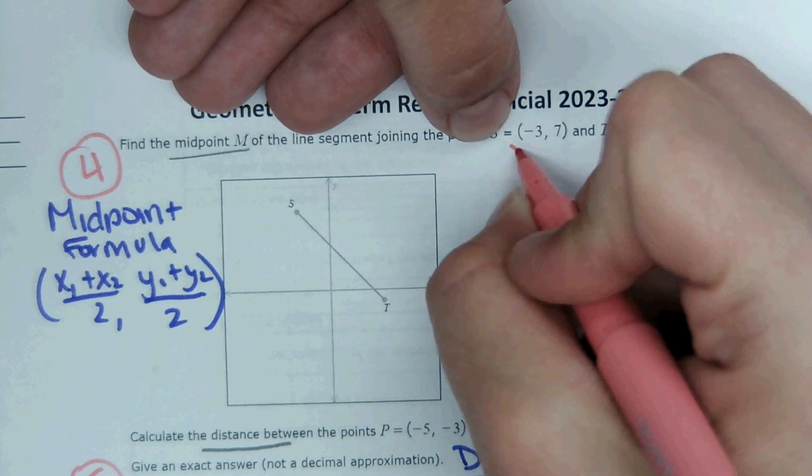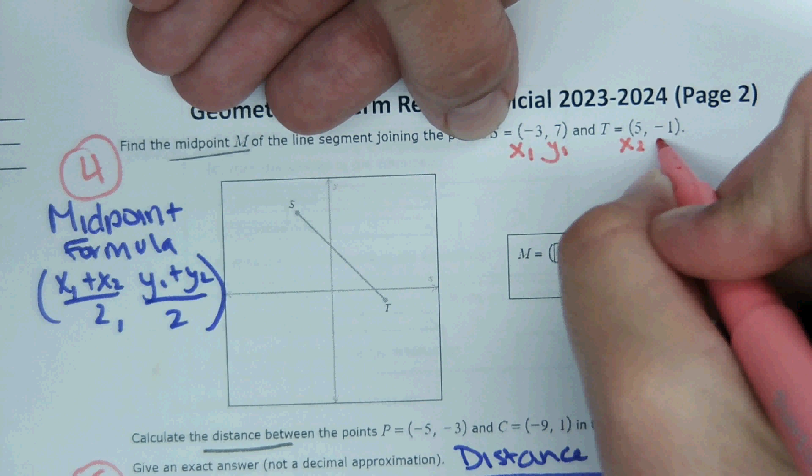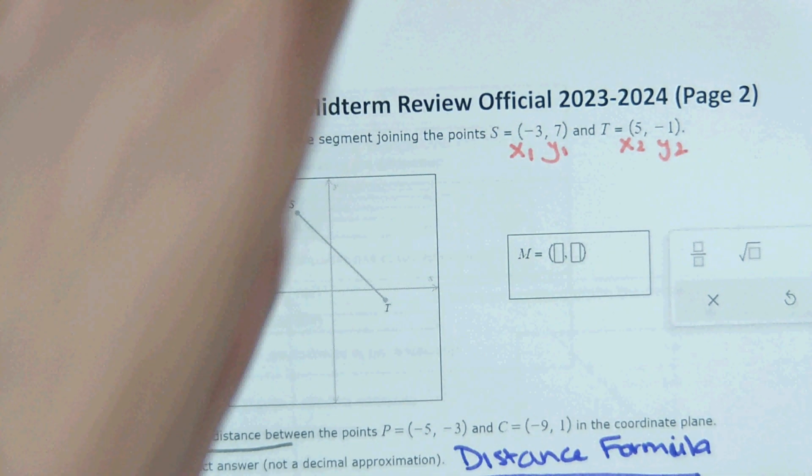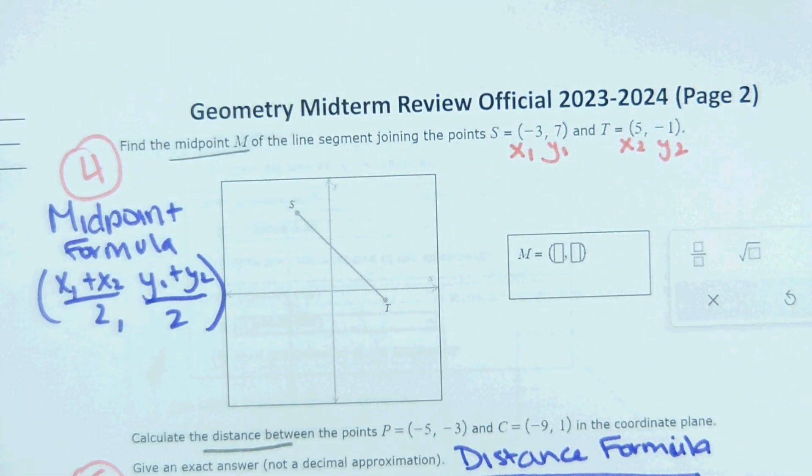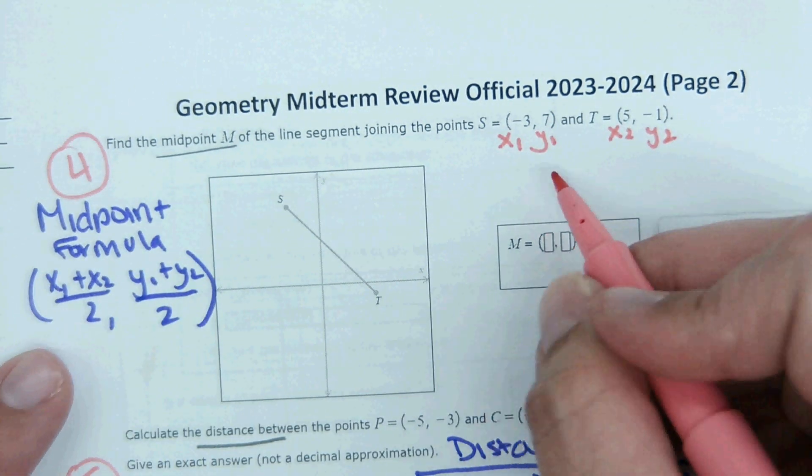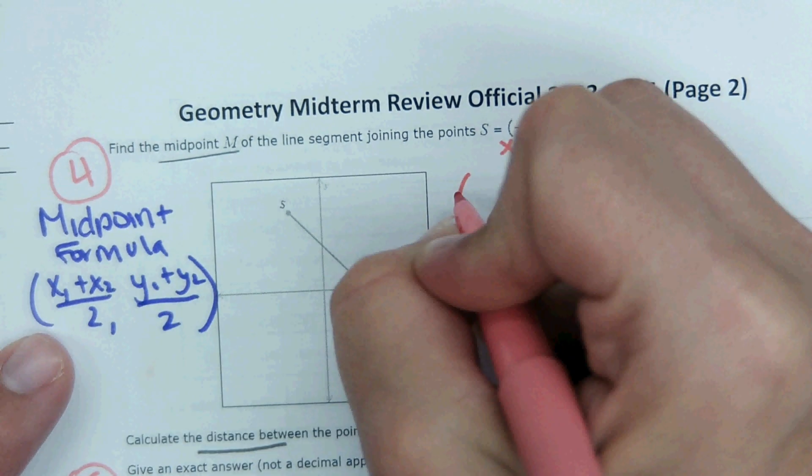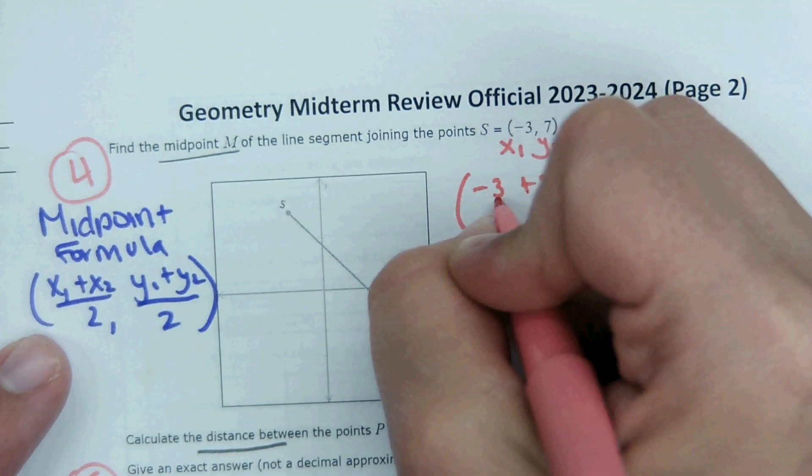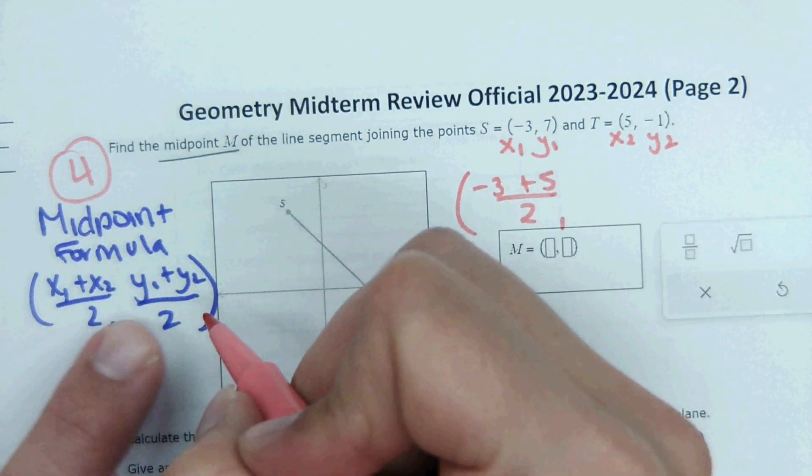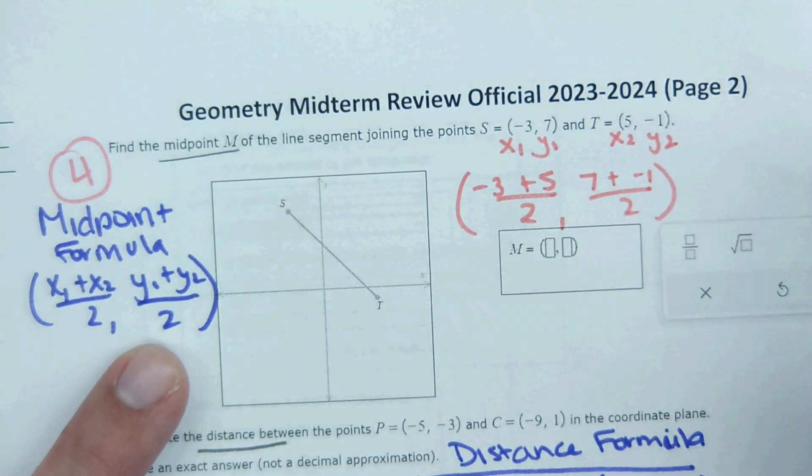Then you want to label your points. So, the first set of points would be x1, y1. And then the second set is x2, y2. Then, from there, you plug in your numbers into the formula. So, you're adding your x's together. Negative 3 plus 5, divide by 2. And then adding your y's together. 7 plus negative 1, divide by 2.